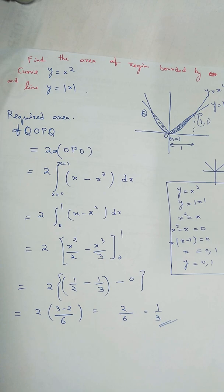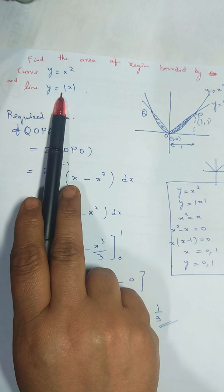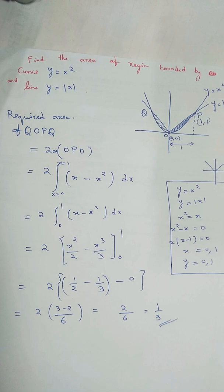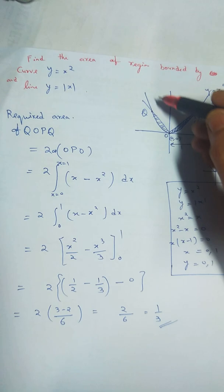Hello friends, today I am taking one more question: find the area of the region bounded by curve y=x² and line y=|x|. We know the curve y=x² is definitely a parabola.